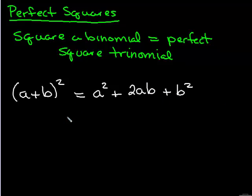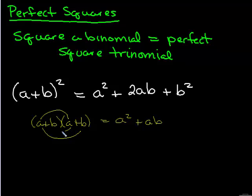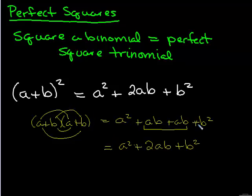The reason this works is because if we were to FOIL this out, first gives us the a squared, outside gives us ab, inside gives us ab, and then last gives us b squared. ab plus ab is 2ab. So you can see that we can skip this step and just, once we see that we're squaring, square the first, multiply the first and second together times two, and then square the second.